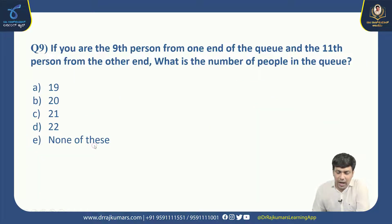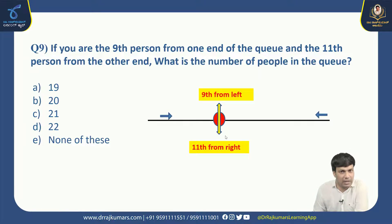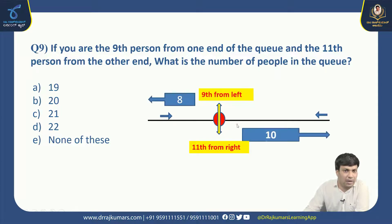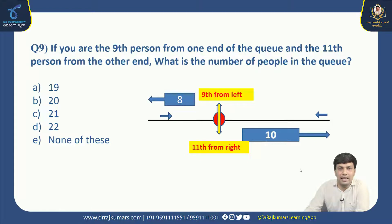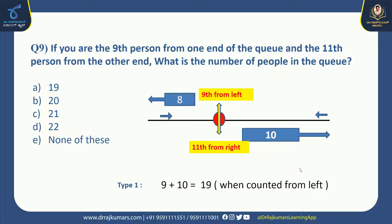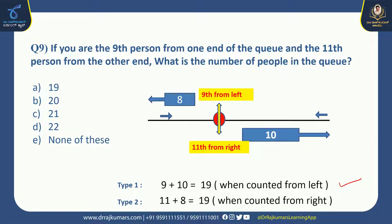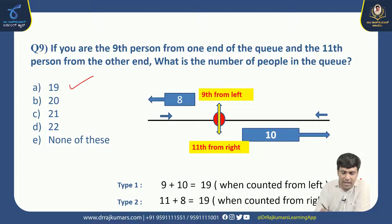Next: You are the 9th person from one end of a queue and 11th person from the other end. What is the number of persons in the queue? When counted from the left, there are 8 persons behind the 9th position. When counted from the right, there are 10 positions behind. So 9 plus 10 equals 19. Verified from the right: 11 plus 8 also equals 19. Right option is A, 19 persons.